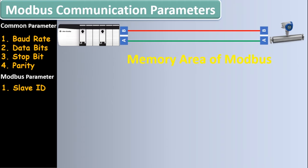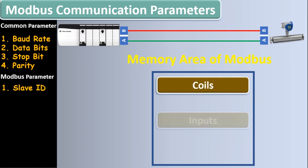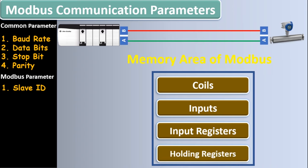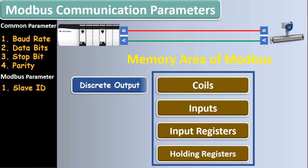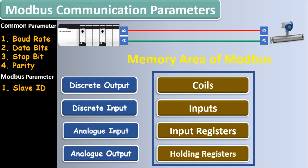Starting with the memory area of Modbus: it consists of four parts — coil, input, input register, and holding register. Modbus was introduced by Modicon and its memory area was defined just like the memory area of a PLC. Coil corresponds to discrete output in PLC; input corresponds to discrete input in PLC; input register and holding register correspond to analog input and analog output in the PLC. Coils and inputs have one bit of data, while input registers and holding registers are 16 bits of data.